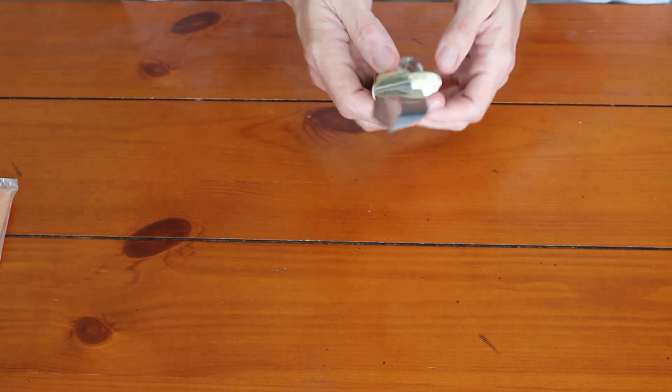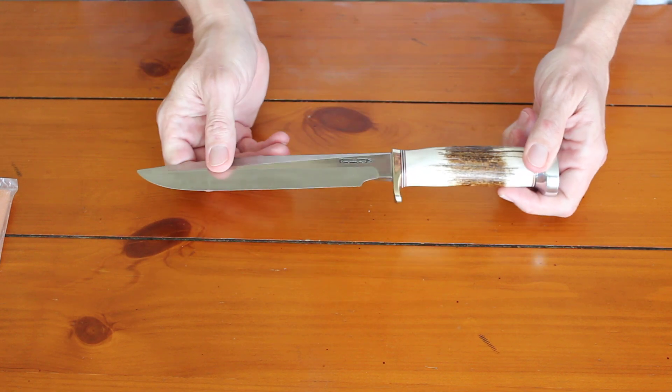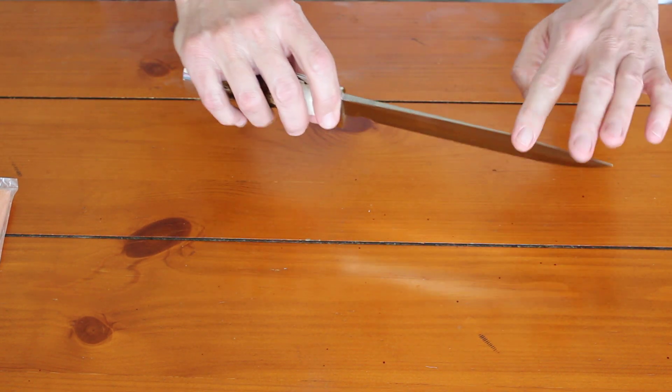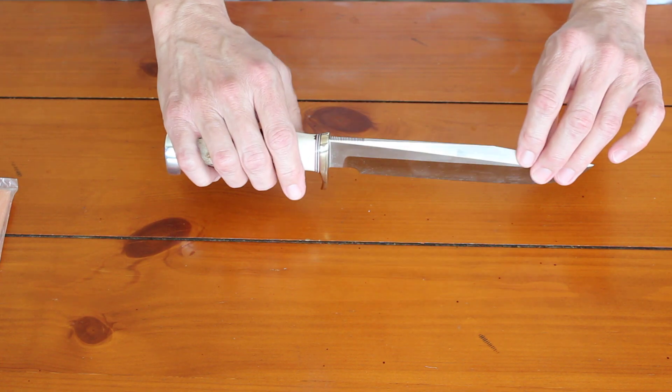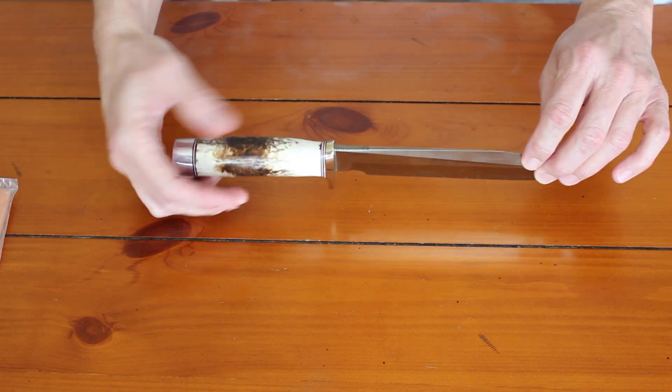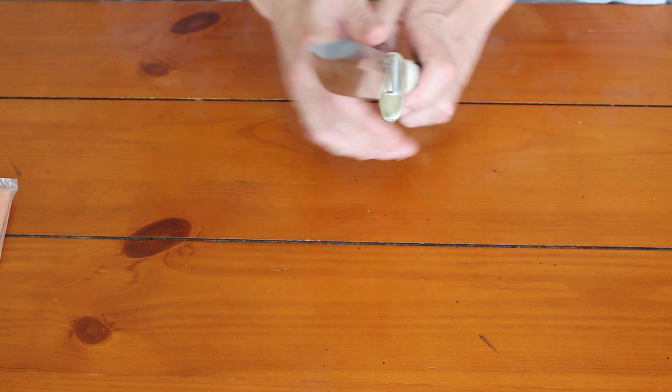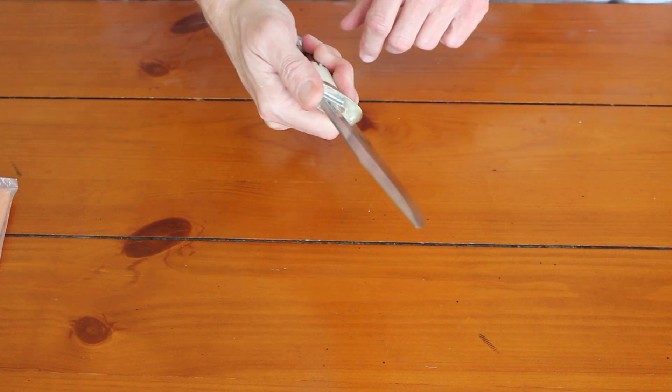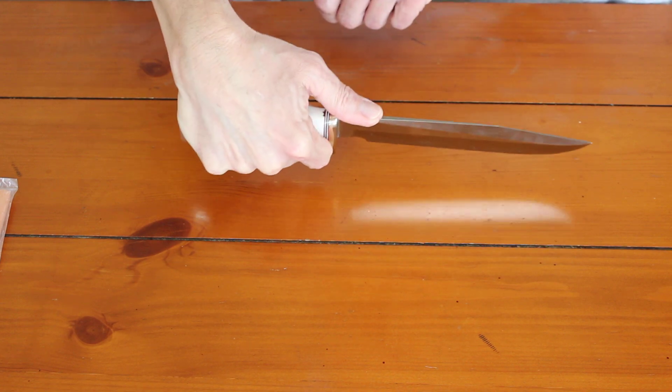That's a really nice stag handle. This is the Model 5, which looks a lot like a Model 1. What's different are the thumb grooves on the top. I like the way the thumb grooves feel.